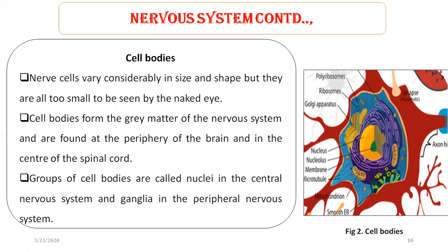Now coming to the point of cell bodies. Nerve cells vary considerably in size and shape but they are too small to be seen by the naked eye. Cell bodies form the grey matter of the nervous system and they are found at the periphery of the brain and in the center of the spinal cord.